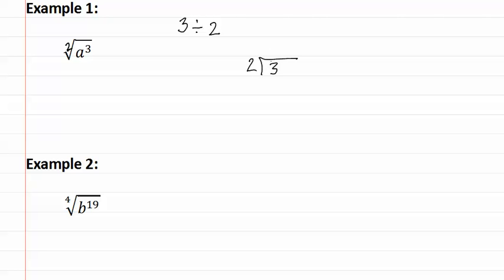If we do a quick long division, we can see that three divided by two goes in once with a remainder of one. The whole number means one a comes out. The remainder says how many a's stay in, which means one a stays inside.